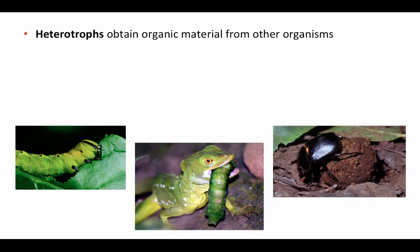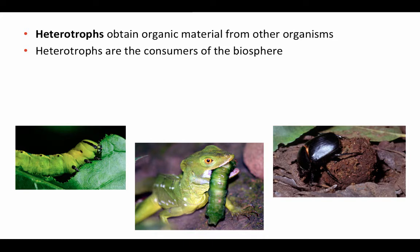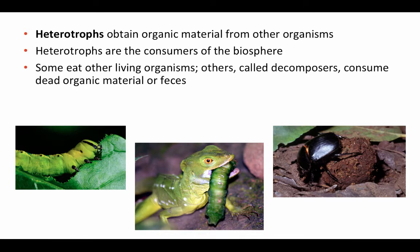In contrast, the takers — as opposed to the makers — are heterotrophs. They obtain all their organic material and energy from consuming other living organisms, so these are the consumers of the biosphere. Some eat living organisms such as plant tissue consumed by a caterpillar, or the caterpillar being consumed by a lizard. Others known as decomposers consume dead organic material or feces, as in the case of the dung beetle rolling a ball of fecal material to feed its young.